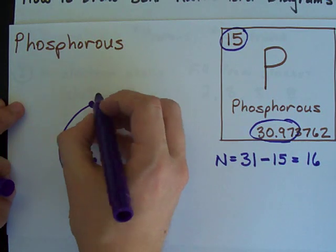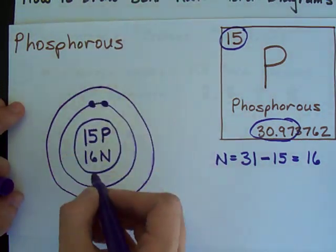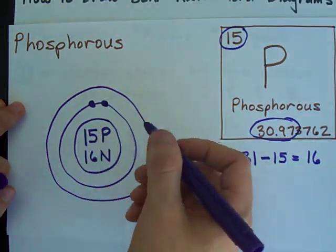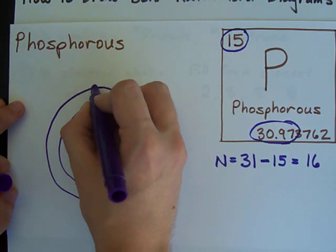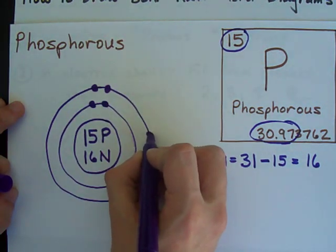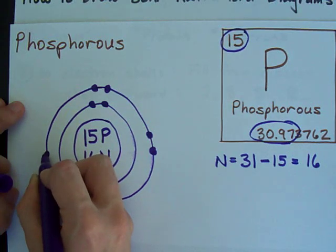And then I can draw a second circle and put up to eight electrons in that second circle. Now I need 15, and I only have two there so far, so I definitely need eight more. Three, four, five, six, seven, eight.